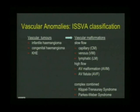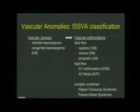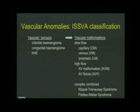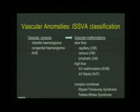Moving on to this group of vascular malformations - we've discussed some of the features of vascular tumors, but these are very different. Vascular malformations are not tumors. We would not expect to see tumor parenchyma on any imaging, on ultrasound or on MRI. They are due to errors in vascular morphogenesis of the various channels, so they're not tumors.